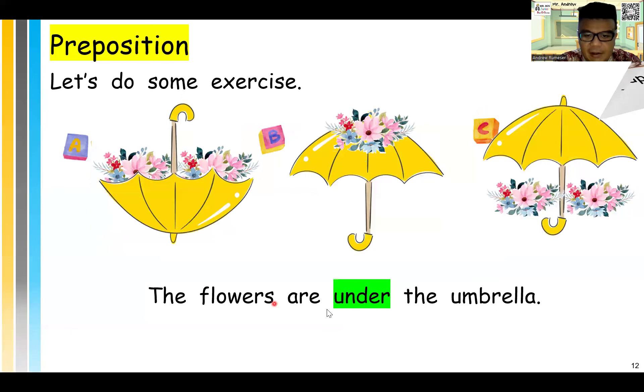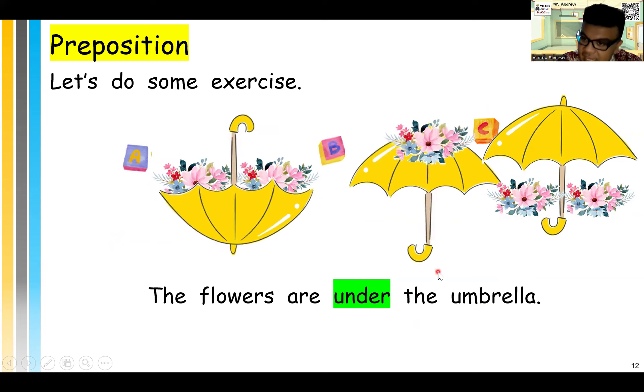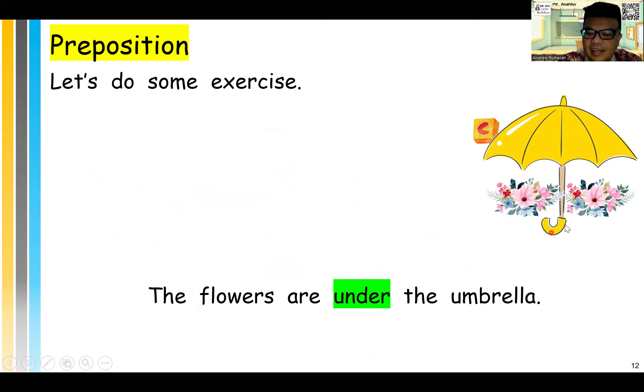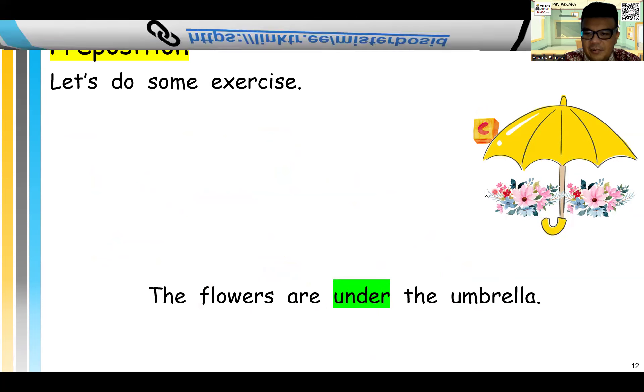Next, the flowers are under the umbrella. Which one is under? This one? A, B, this one, or that one? C. Which one? Under the umbrella. A, B, or C? The answer is, that's right. C, under the umbrella.